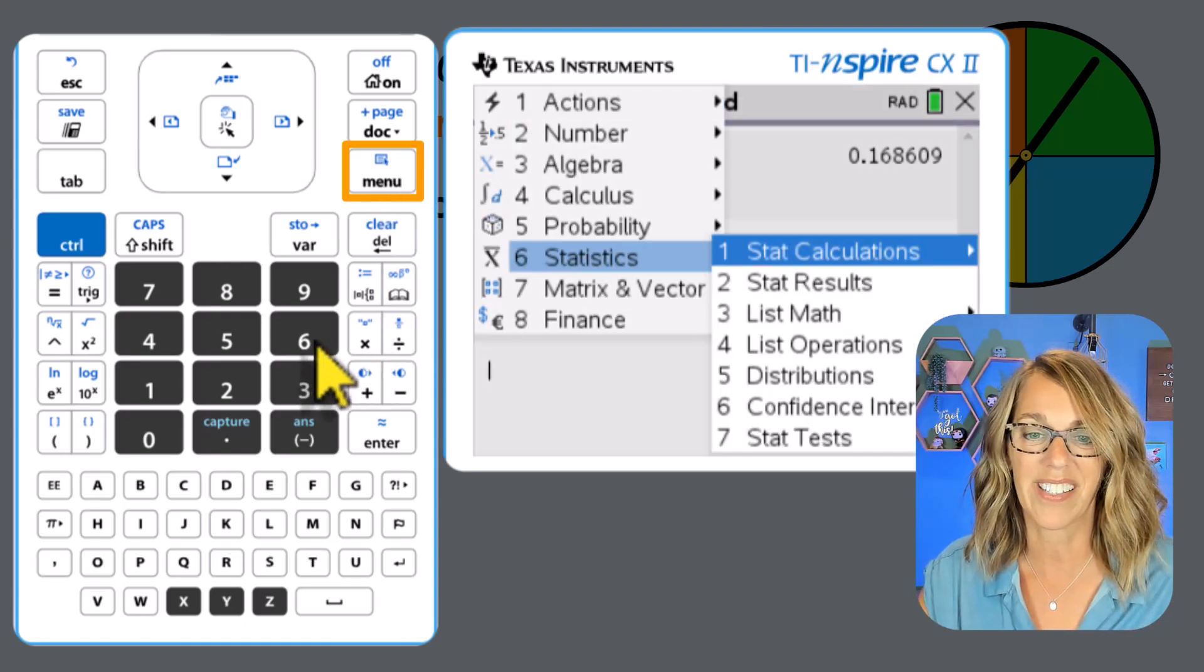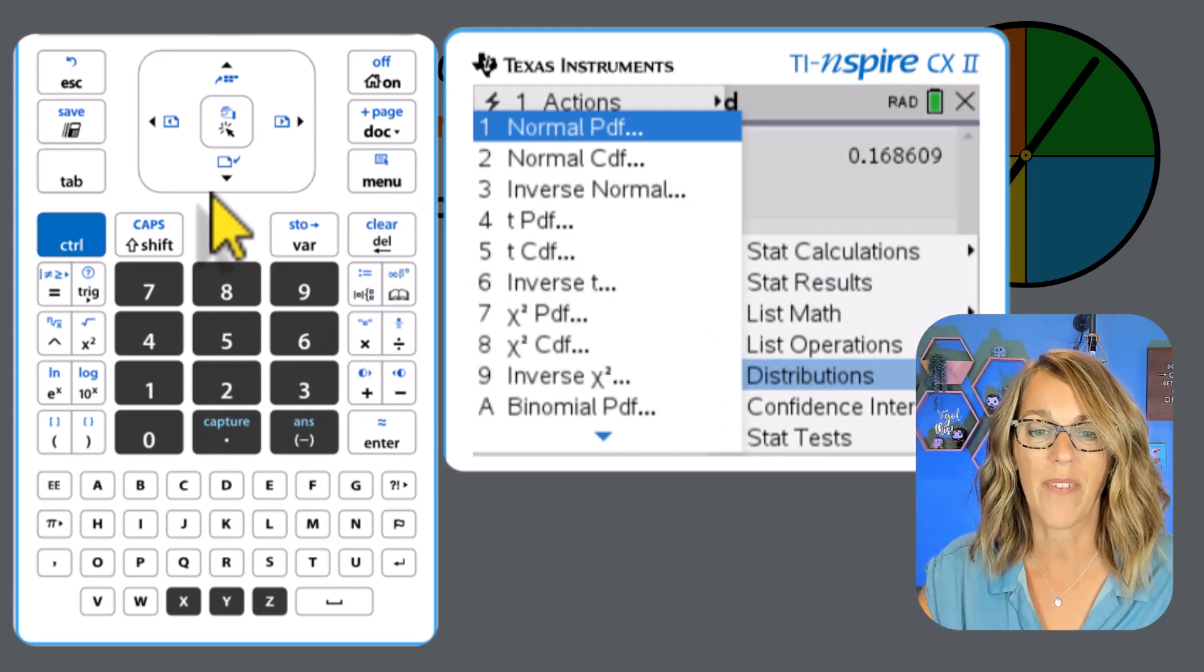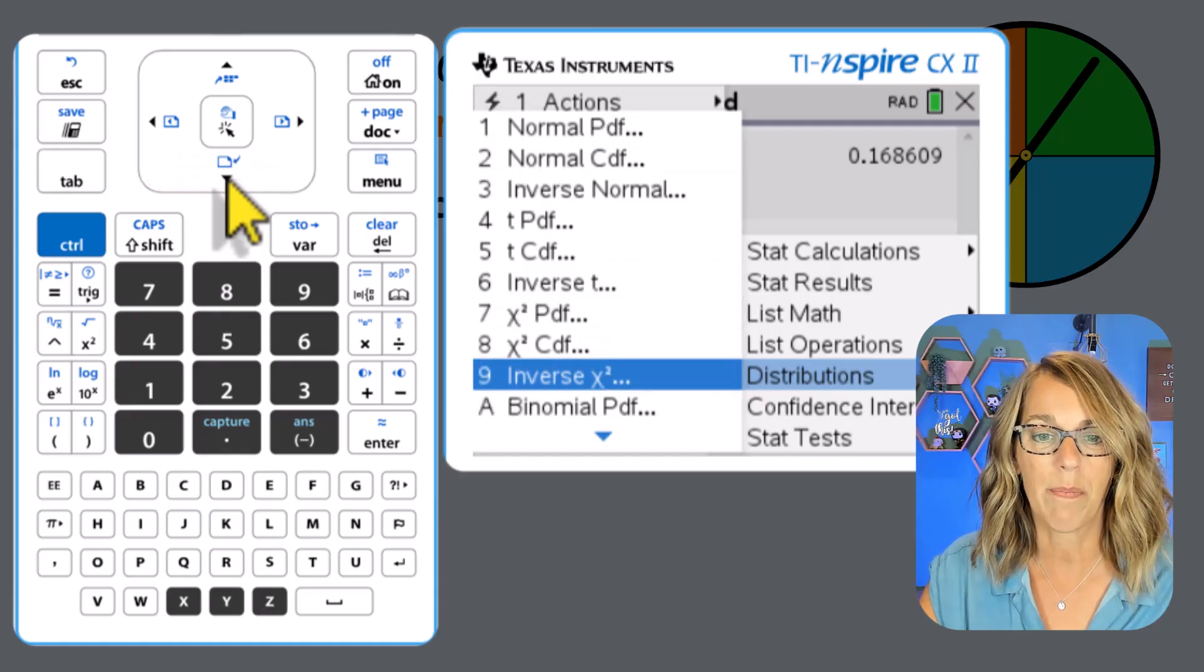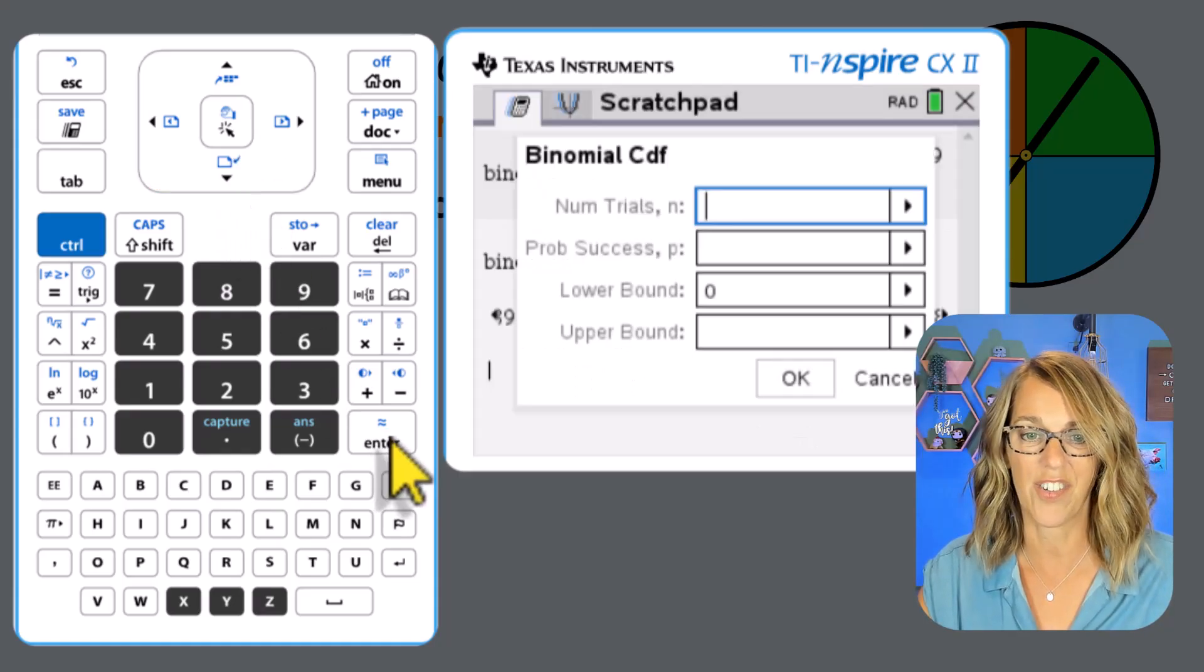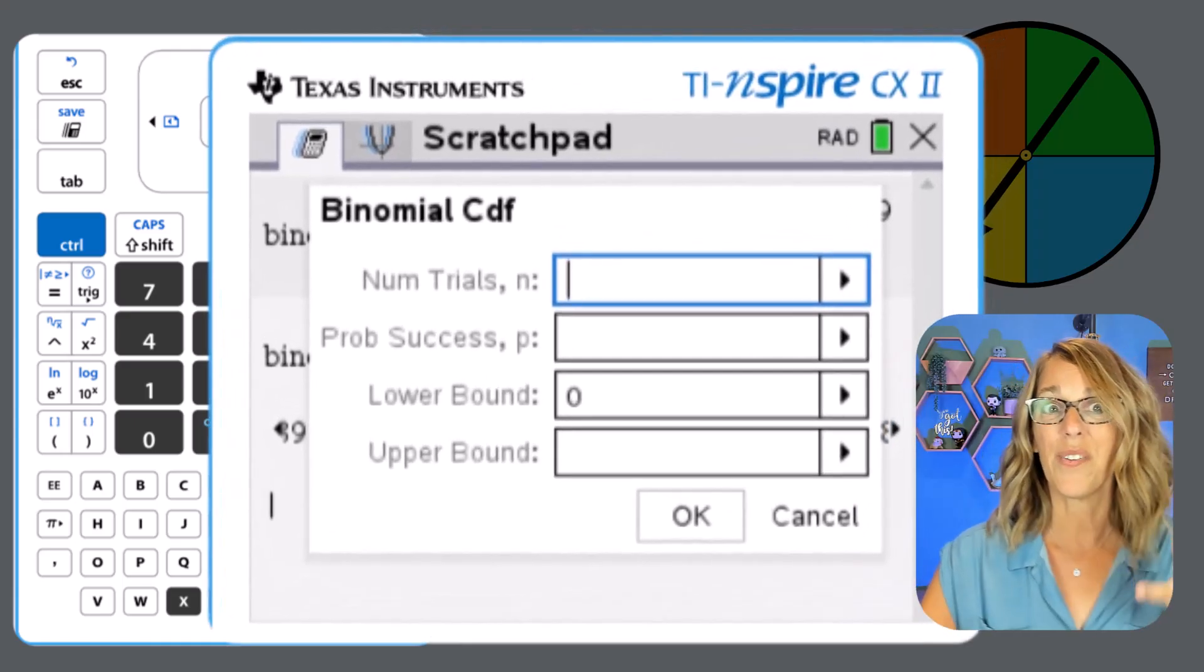Which is number six, and then distributions, which is number five. This time, I want letter B, which is binomial CDF. Let's hit enter to choose that. And it gives me a few more options.